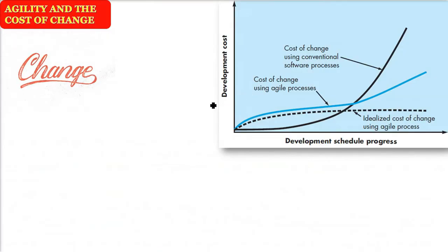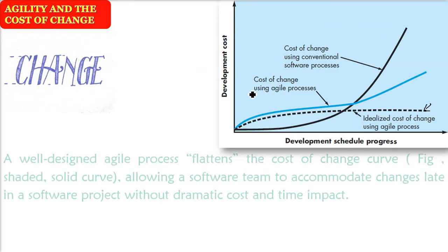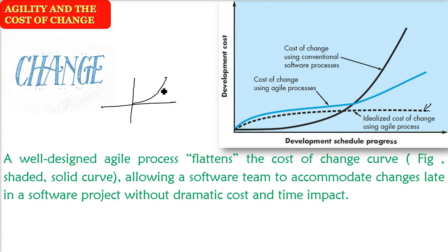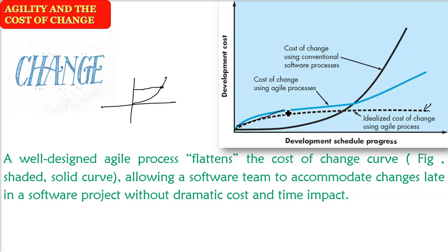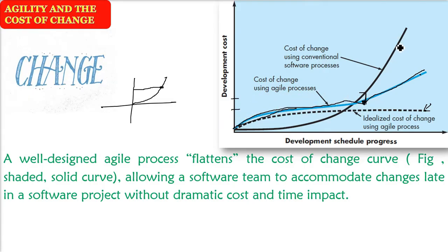Now let me tell you about agile. This is the blue line you are seeing. It ideally should be at the dotted line, but it is very difficult to achieve that. However, with a well-designed agile process, the curve that was steeply rising because of prescriptive models can be flattened. Because of the well-designed agile process, the cost can be reduced, as the software team can now accommodate changes at the later stages with no adverse or dramatic cost and time impact.